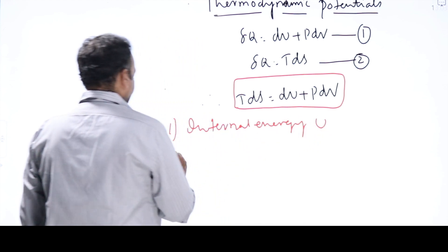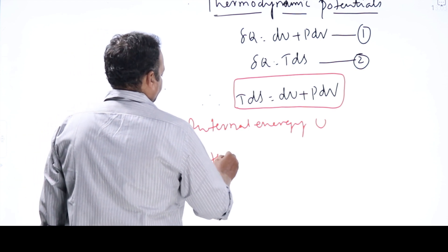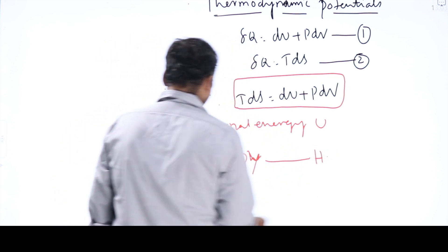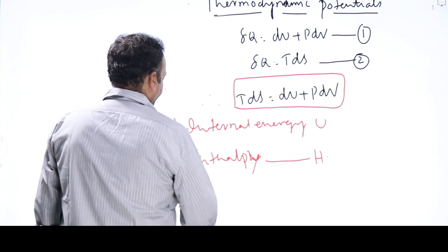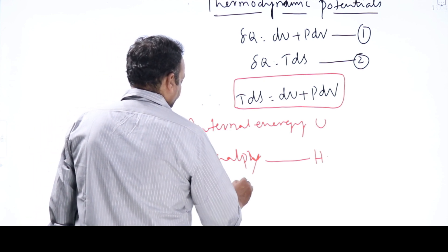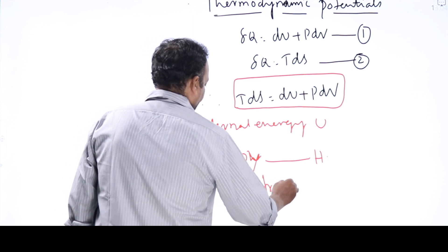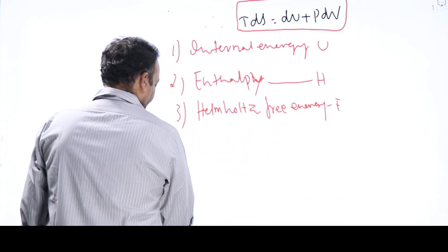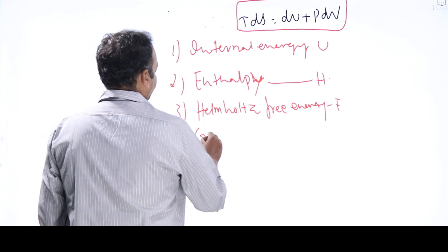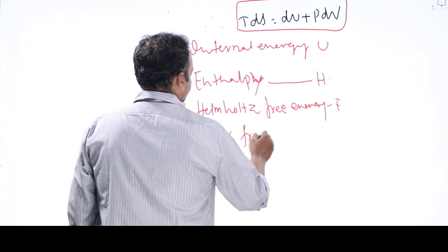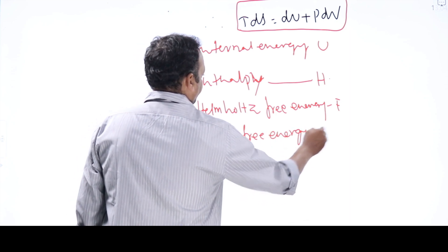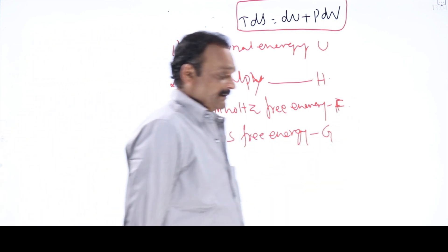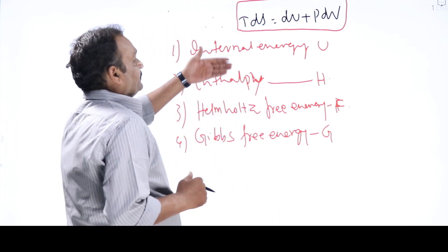The first thermodynamic potential is internal energy, U. The second one is enthalpy, H. The third one is Helmholtz free energy, F. The fourth one is Gibbs free energy, denoted by G. These are known as thermodynamic potentials, which are nothing but energy functions. Now we have to see them one after the other.